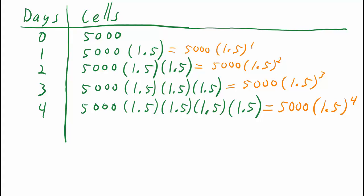And after zero days, let's see if this pattern holds up. It should be if this pattern holds up: four, three, two, one on our exponents. 5,000 times 1.5 to the zero power.